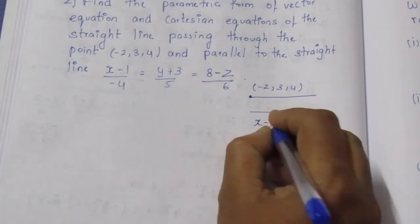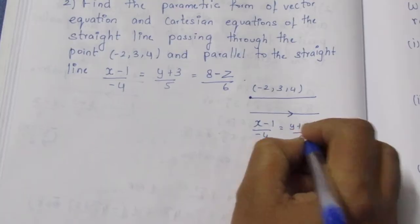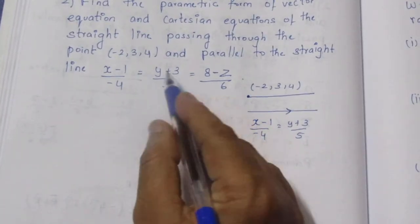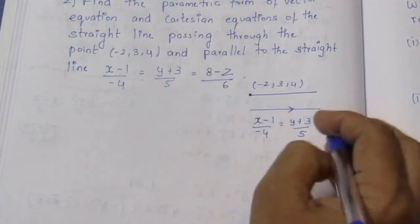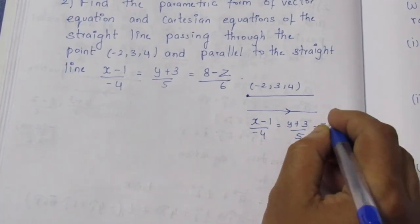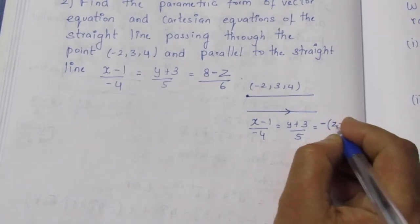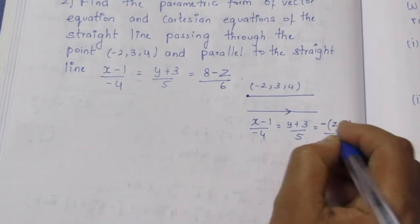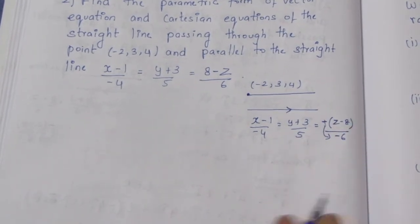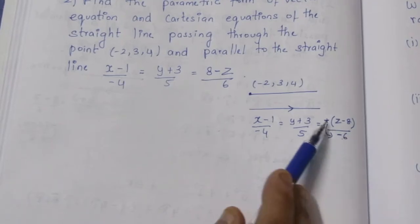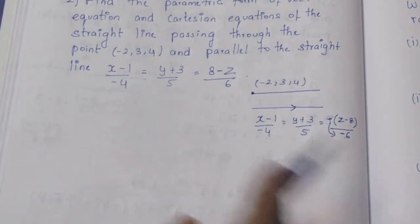Looking at the given line equation, x minus 1 by minus 4 is equal to y plus 3 by 5. For the z term, we have 8 minus z. The variable is in front, so we need to adjust the sign. Instead of (8-z)/6, we write it as (z-8)/(-6). When the variable comes first, we take the minus sign down to the denominator, so it becomes minus 6.